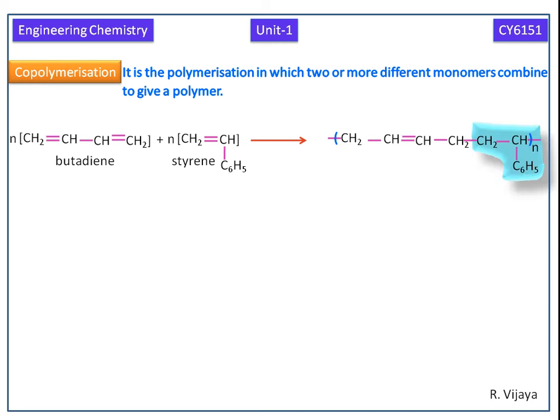This is a styrene unit. This is a butadiene unit. So we can say styrene butadiene rubber, or in simple terms, SBR. SBR comes from the first letters of styrene, butadiene, and rubber respectively.